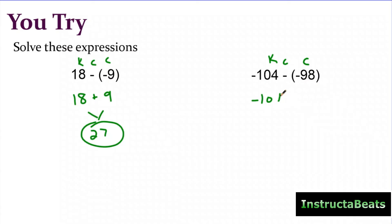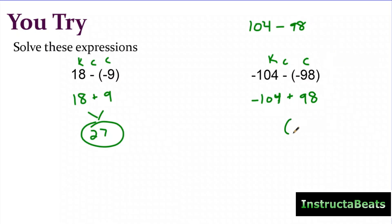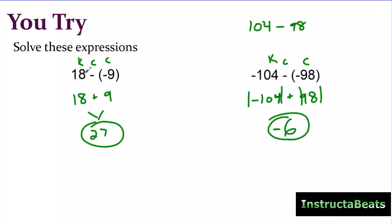Here again I am subtracting, so I'm going to keep the first number the same, change my subtraction to an addition sign, and change my negative to a positive. Now I have a negative and a positive, so my signs are different, which means I'm going to subtract these. I put the number with the biggest absolute value on top — that's negative 104. So 104 minus 98 gives me an answer of six. The number with the biggest absolute value was negative 104 and that had a negative sign, which means my answer is going to be negative six. For the I do problem, I didn't label keep change change because I want you to understand what you're doing, but if it helps, go ahead and label the numbers as keep change change when it's a subtraction problem, and that will help you rewrite it as its additive inverse.